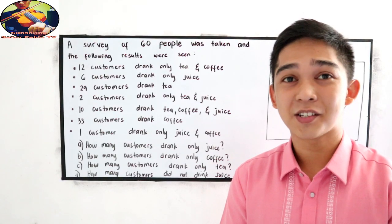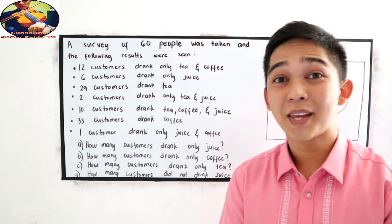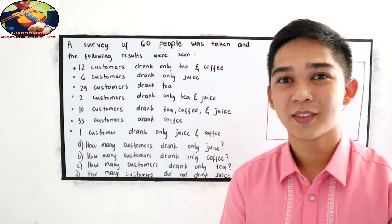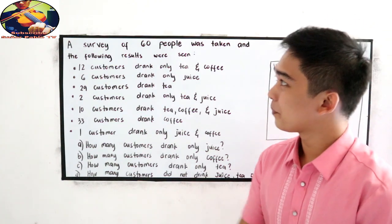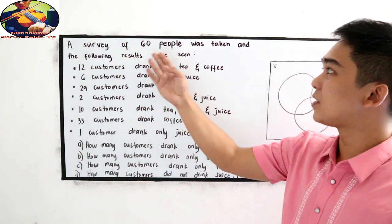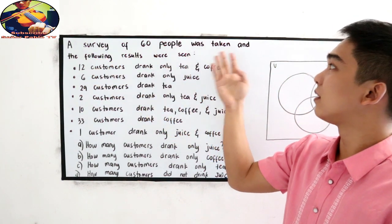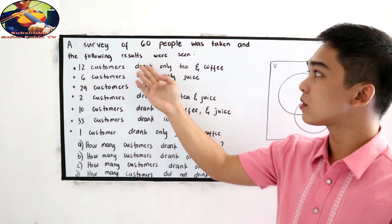And now let's have your exercises in the application of Venn Diagram. The question is, a survey of 60 people was taken and the following results were seen.